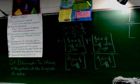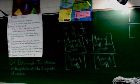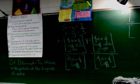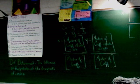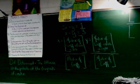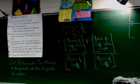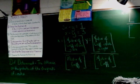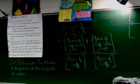Step four: in the numerators, for x, lift up the right column from the denominator. And for y, lift up the left column from the denominator. Step five: in the remaining blank spots, fill in with the constants in the order they appear with their signs.